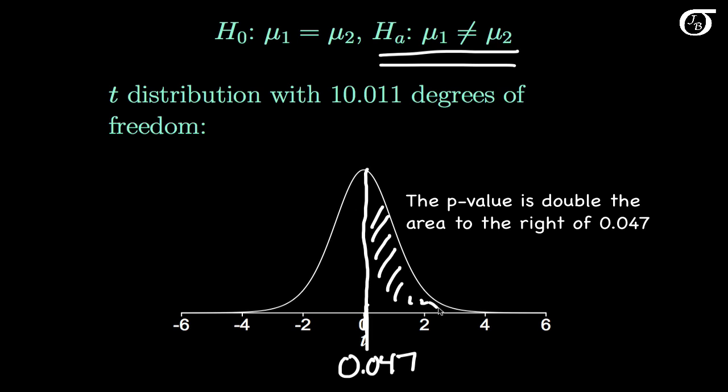And if we go to software, we can find that the p-value is 0.96. If we went to a table we couldn't find the exact value, but we could find out that the p-value is very large.